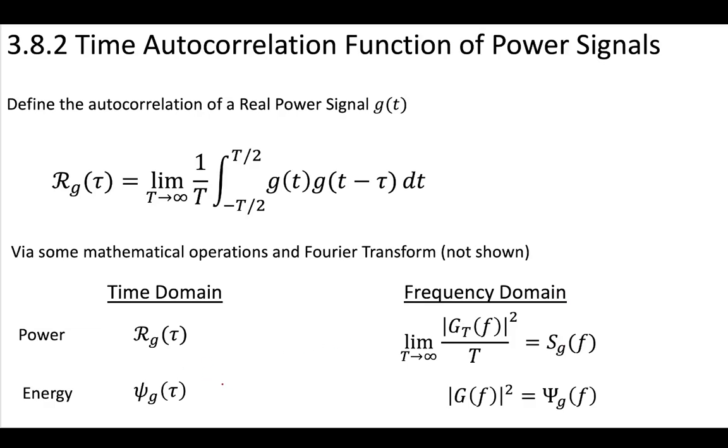Now recall that we have the same result for the energy signal density, where if we did the autocorrelation, then we defined this as the energy signal density. So the autocorrelation of a power signal is going to give us a power signal density in the frequency domain, and the autocorrelation in time of an energy signal is going to give us the energy signal density. So this is an important concept and relates our understanding of power signals and energy signals.